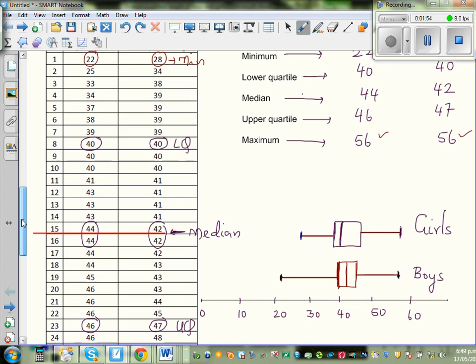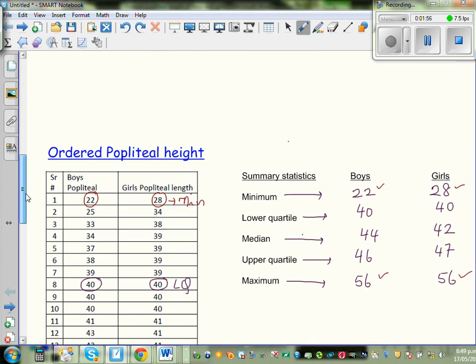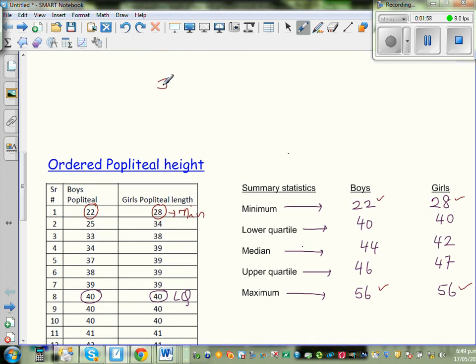Median is the middle of the data. So if you've got 30 data, the middle would be between the 15th and the 16th. So this is how I calculate: 30 plus 1 over 2 which is 31 over 2 which is 15.5 data.